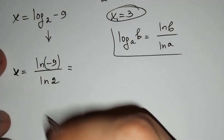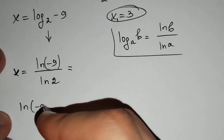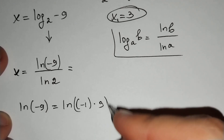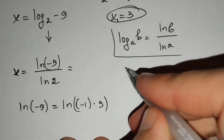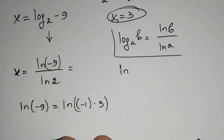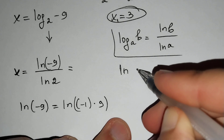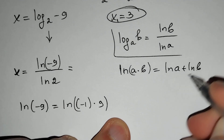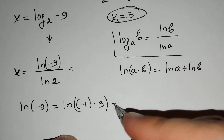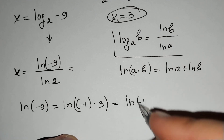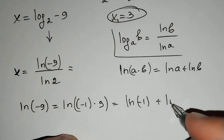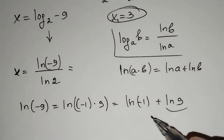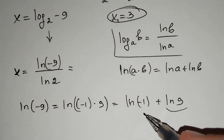We need to find ln(−9). We write ln(−9) = ln(−1 × 9). Using the logarithm product rule ln(ab) = ln(a) + ln(b), this equals ln(−1) + ln(9). We know ln(9), so we need to find ln(−1).